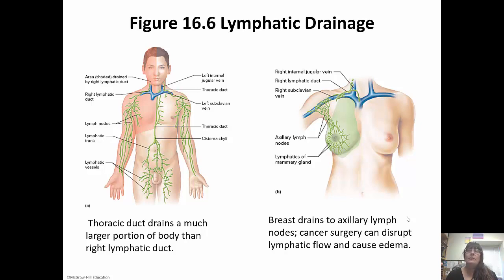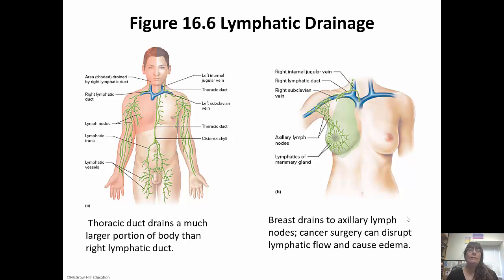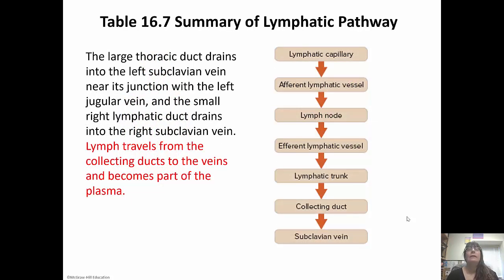The breast drains to the axillary lymph nodes — make sure you know that. One problem with surgeries, like cancer surgery, is that it can disrupt the flow of lymph. Once the flow is disrupted, that lymph has nowhere to go, so it collects wherever the flow is disrupted and causes swelling, or edema. The large thoracic duct drains into the left subclavian vein near its junction with the left jugular vein, and the smaller right lymphatic duct drains into the right subclavian vein. Lymph then travels from the collecting ducts to the veins and becomes part of the plasma.